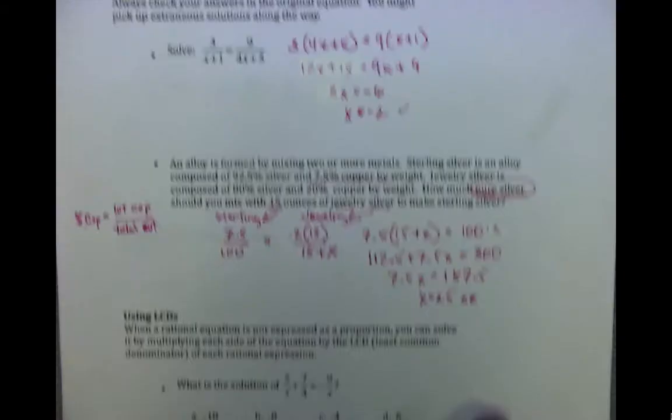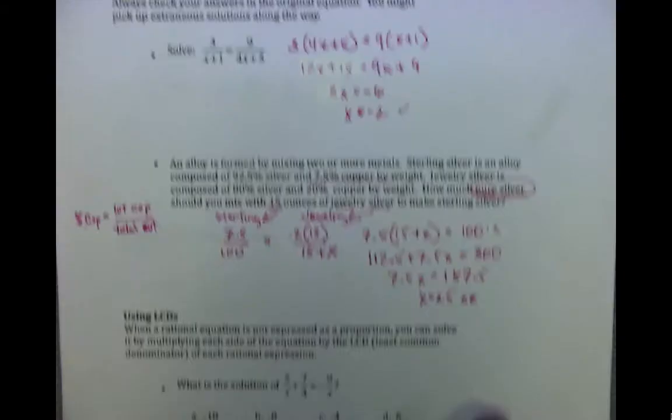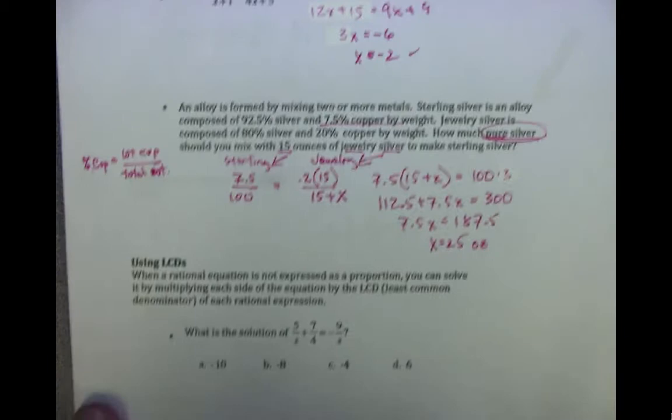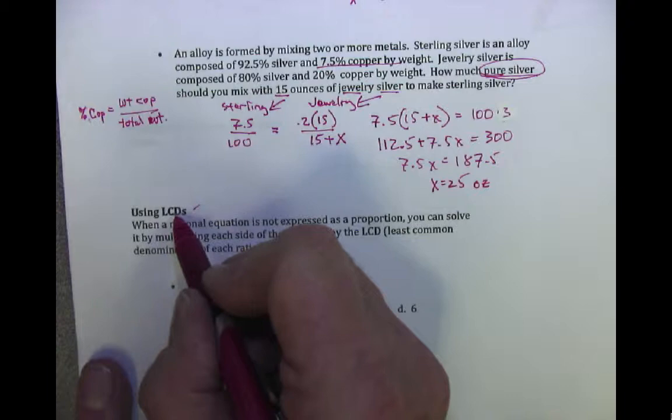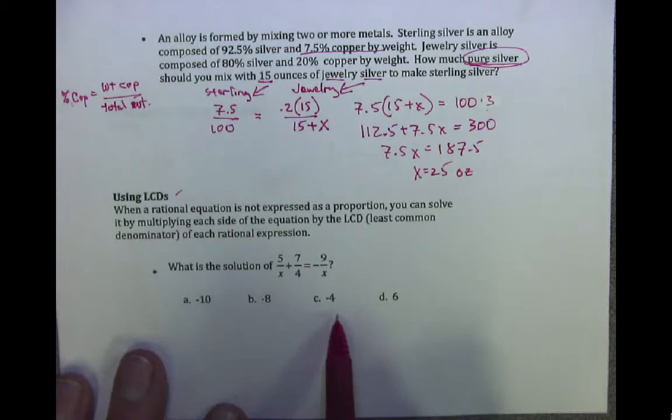You've got to set it up right, of course, but after that point you just cross-multiply. Now sometimes we're going to use something called the LCD — remember that? Lowest common denominator, or least common denominator. Let's see how this is going to work out.